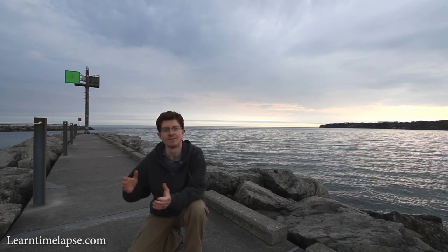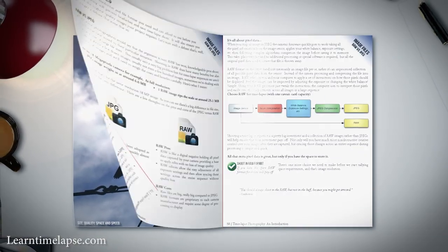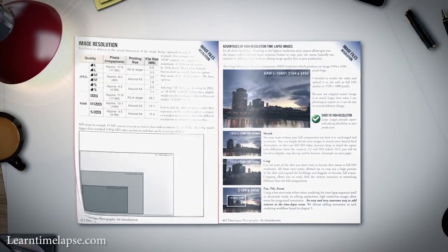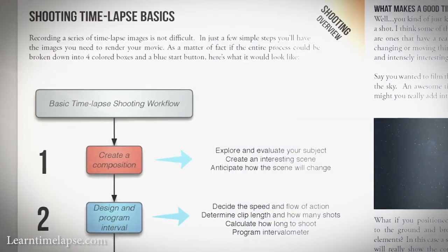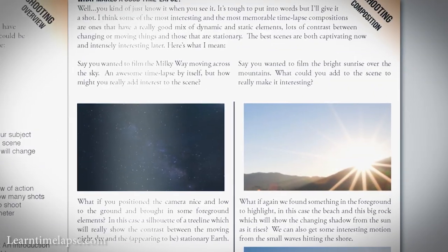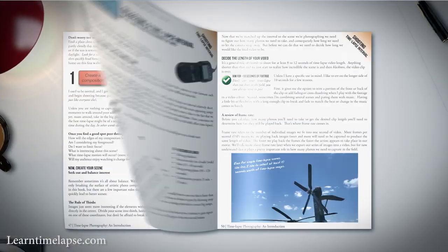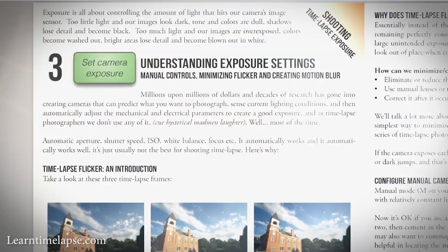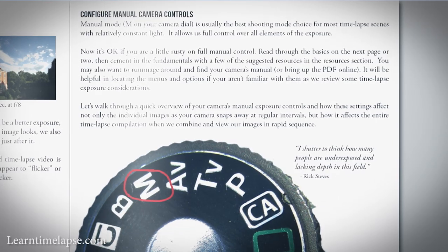Then we talk about image settings, quality, and resolution — basically how you can fit all those timelapse images onto your DSLR camera. Then we get into the meat of the book, which is shooting timelapse sequences. We talk about tips on creating a good composition, and how you can balance speed and flow by choosing the right timelapse interval and settings, as well as different exposure modes and ways to avoid flicker.